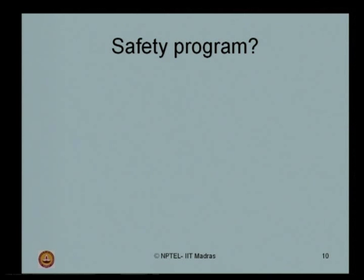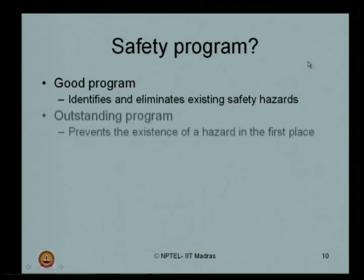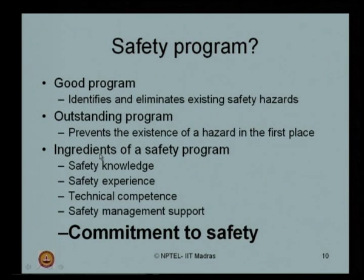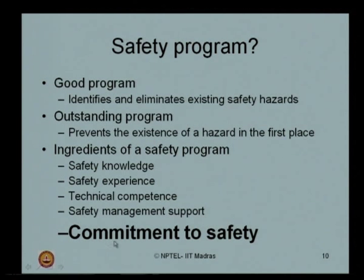A frequently used term in HSE is a safety program. A safety program is categorized into two parts. One is a good program, which identifies and eliminates existing safety hazards. The other is an outstanding program, which prevents the existence of a hazard in the first place. The ingredients for a safety program are: knowledge about safety, experience in safety, technical competence, safety management support, and above all, a strong commitment to safety.